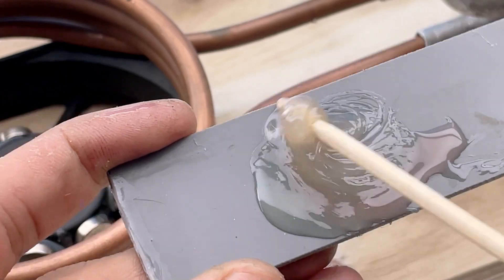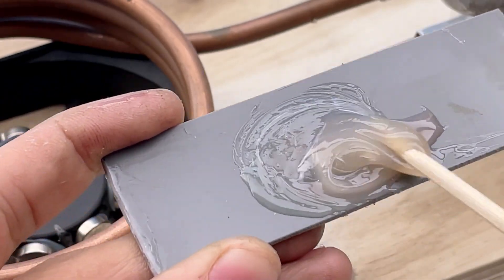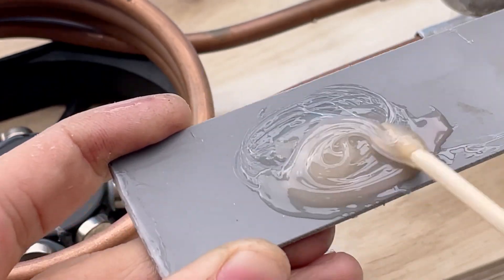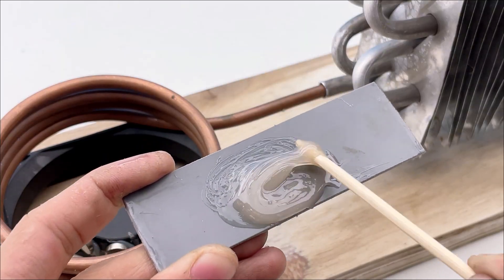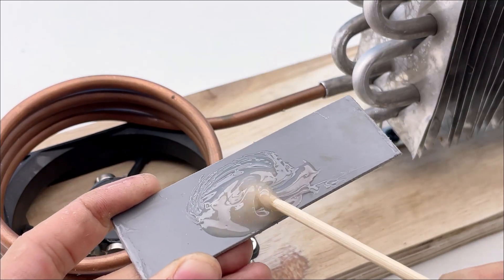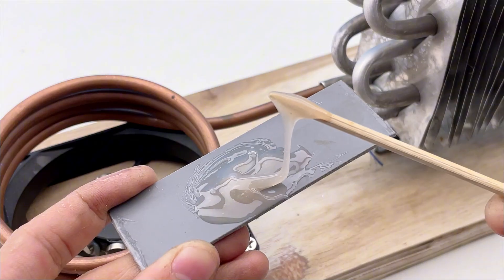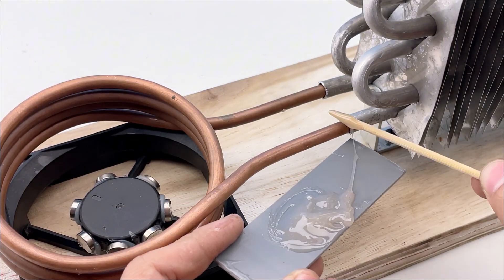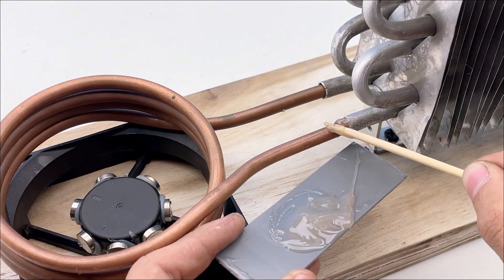This type of glue is specifically used for bonding metal, consisting of an epoxy resin and a hardener. When mixed in the right ratio, they create an extremely strong adhesive that can handle high stress, resist water, heat, corrosion, and remain durable over time.